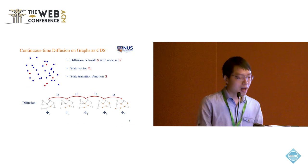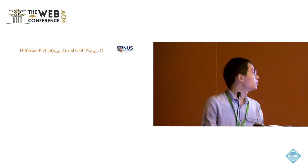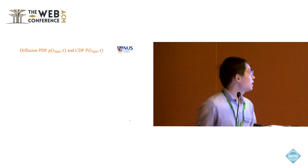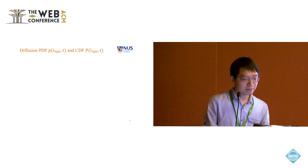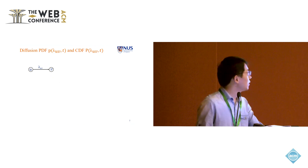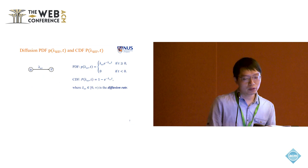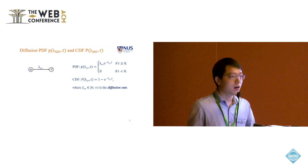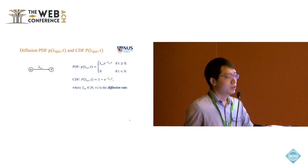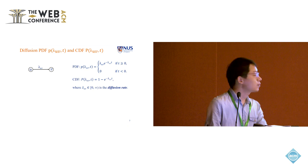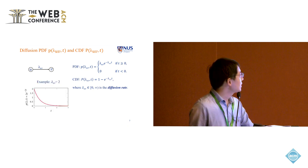So we can note that the state transition function omega here is a key component. But before we reach to that part, we need first to talk about the diffusion functions that are defined on each edge based on the diffusion rate lambda uv. Here given two nodes and the diffusion rate lambda uv, we assume that the diffusion function can be modeled as an exponential function because the exponential function is widely used in this diffusion research and has been proved quite effective. Here is the corresponding pdf and cdf. And I'll give you an example when we set lambda uv equals to 2.